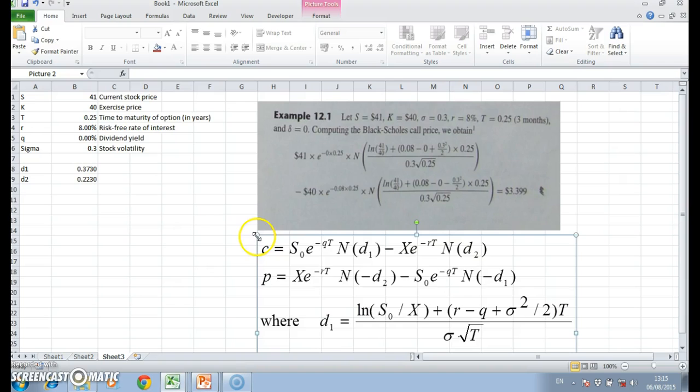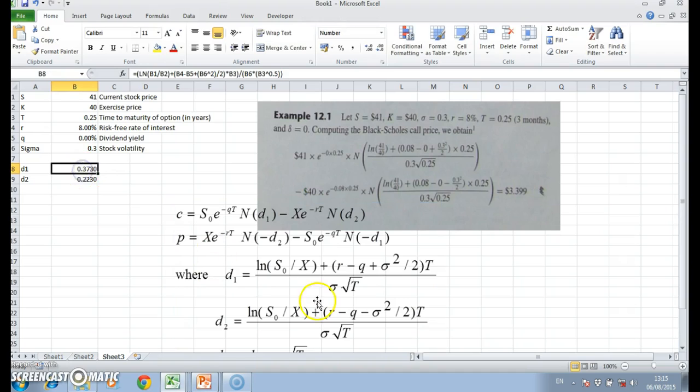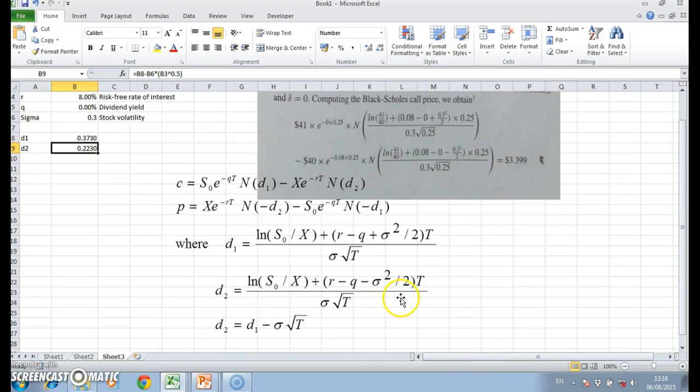And we can see d1: the natural logarithm of S over K or X, plus r negative q, plus sigma squared divided by 2, multiplied by t. t is b3, all over sigma square root of t, and taking the square root of b3 is equivalent to putting to the power of 0.5. And d2 can be written as such.